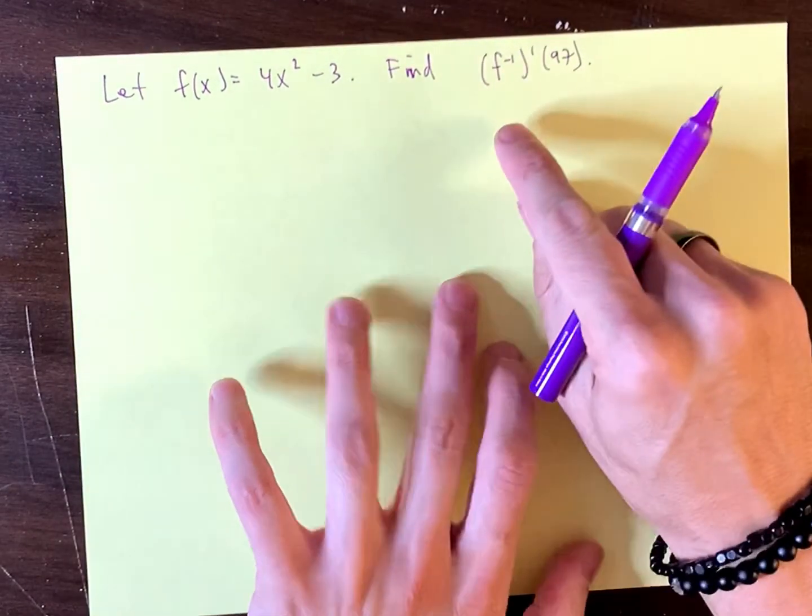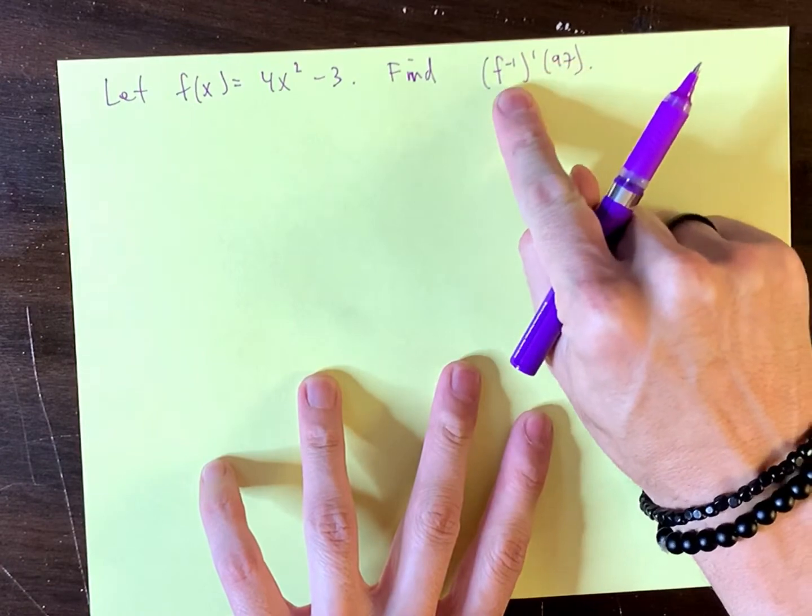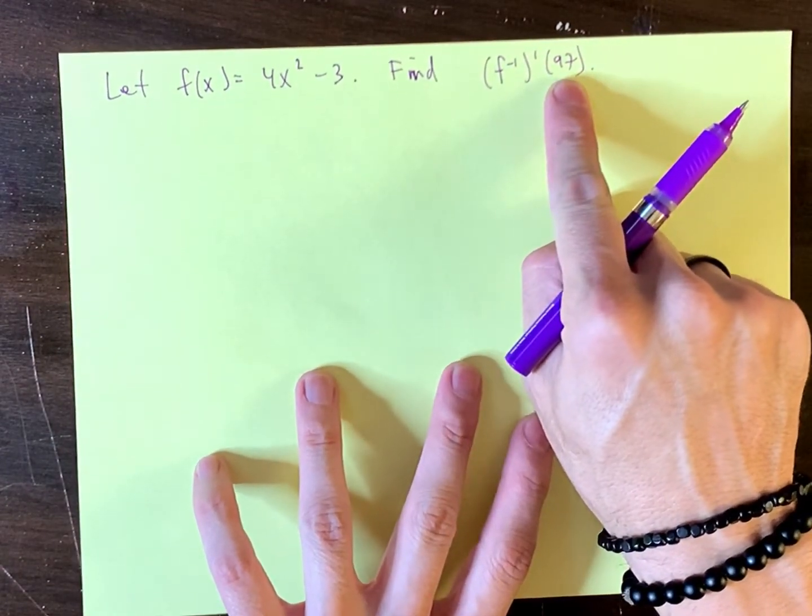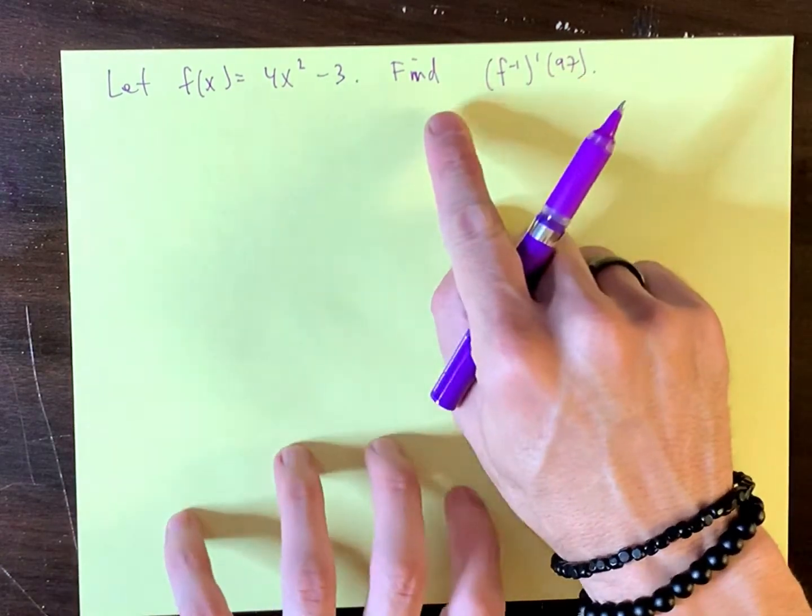So the goal here is to find the derivative of the inverse of f evaluated at the number 97. So let's see what we know.